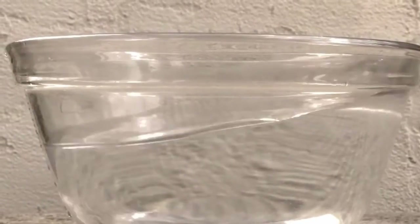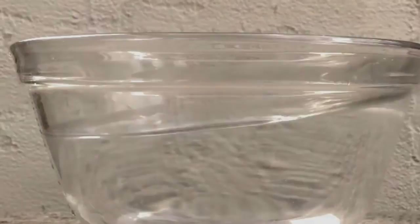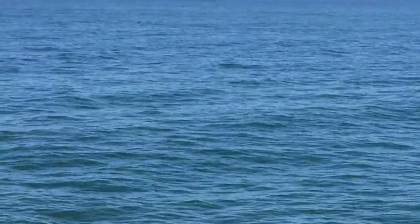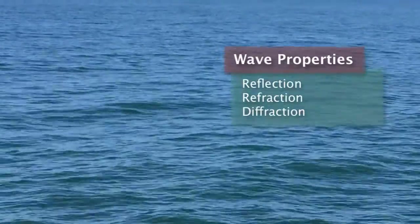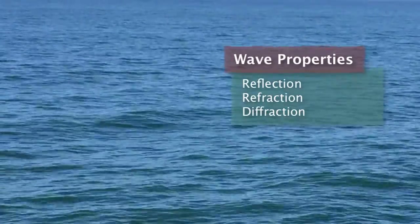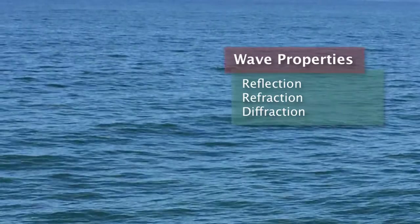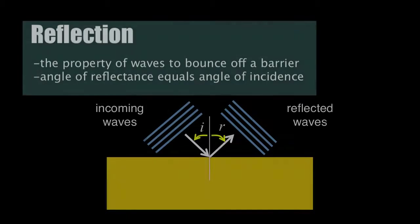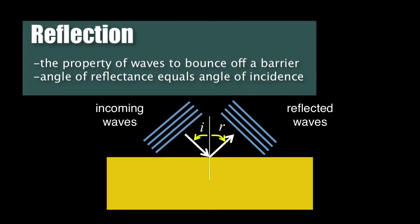Seiche can also form below the surface as internal waves. When we look at some of our next waves, we have to consider the wave properties of reflection, refraction, and diffraction. Reflection is the property of waves to bounce off a barrier like a shoreline or a cliff at the same angle as the angle of incidence.